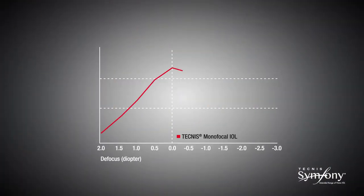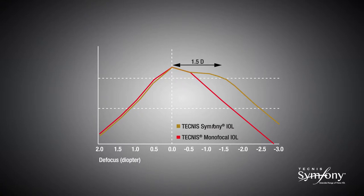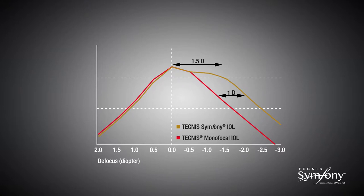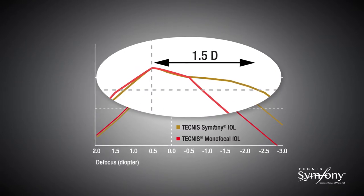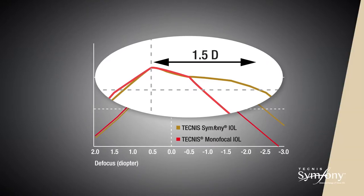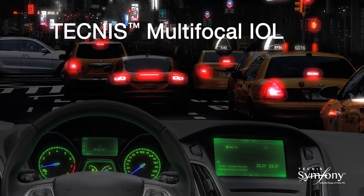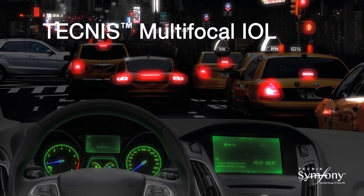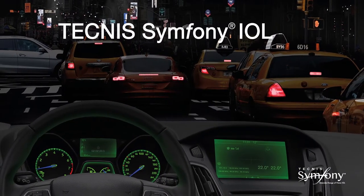Because of its elongated focus, the Technis Symphony IOL delivers high-quality vision through 1.5 diopters of defocus and an increase of 1 diopter range of vision throughout the defocus curve compared to a monofocal IOL. The plateau of the defocus curve demonstrates the extended range of vision of the Technis Symphony lens. In addition, because of the elongated focus, the Technis Symphony IOL does not have the distinct focal points of a multifocal IOL, and as such does not have the distinct out-of-focus images that can lead to halo and glare.